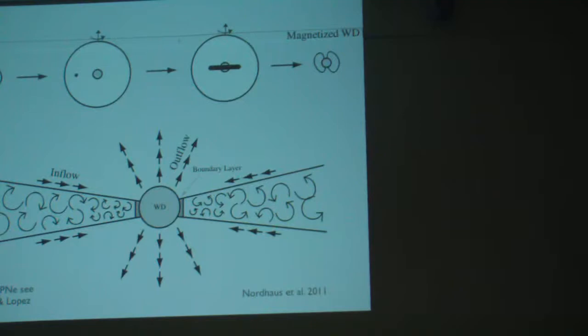If you just use a simple alpha disc model, what you find is that it's actually kind of in a hypercritical accretion state. What that means is that basically photons are being advected with the flow, so they don't have time to diffuse out of the disc. Typically in those kinds of discs, you find those types of discs surrounding neutron stars or black holes.